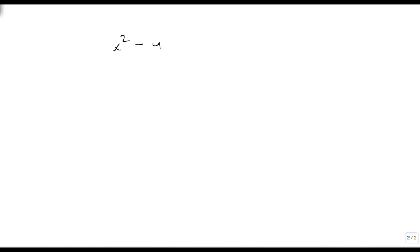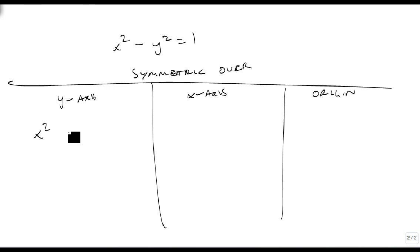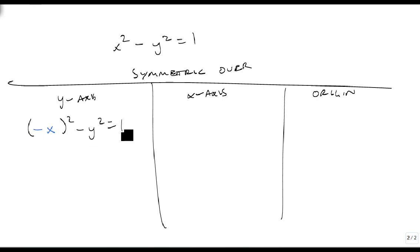Let's look at another case. Suppose the equation is x² - y² = 1. We test symmetry over the y-axis, x-axis, and origin. For the y-axis, wherever we see an x, we replace it with -x. The y stays alone, and (-x)² just becomes x², so we get x² - y² = 1. This is true — it is symmetric about the y-axis.